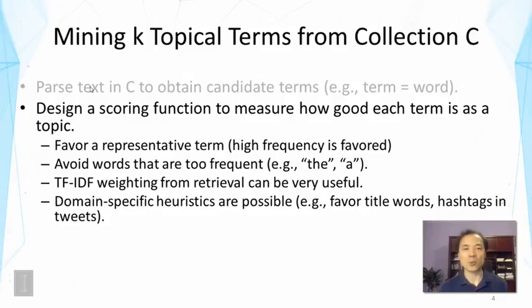A particular approach could be based on TF-IDF weighting from retrieval. TF stands for term frequency and IDF stands for inverse document frequency. We talked about some of these ideas in the lectures about the discovery of word associations. These are statistical methods, meaning the scoring function is defined mostly based on statistics, so it is very general and can be applied to any language or any text. But when we apply such an approach to a particular problem, we might also be able to leverage some domain-specific heuristics.